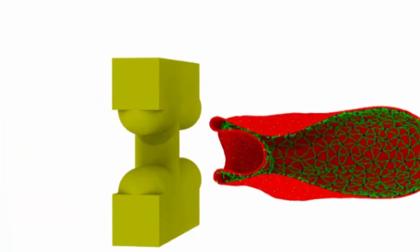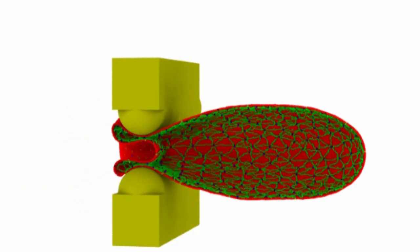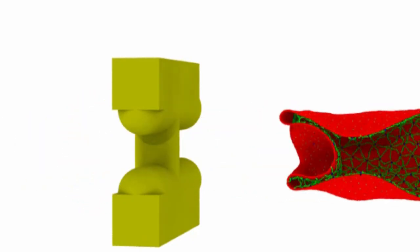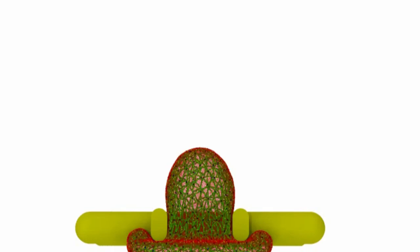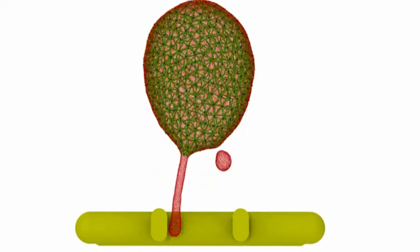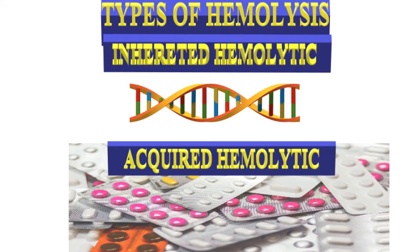In extravascular hemolysis in the spleen, a normal eight-micron RBC can deform itself and pass through the three-micron opening in the splenic cords. RBCs with structural alterations of the membrane surface cannot pass through this network and they are phagocytosed and destroyed by macrophages.